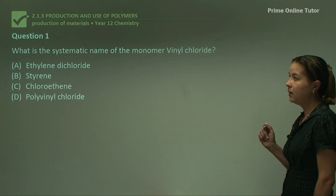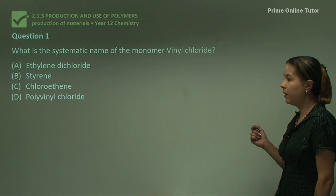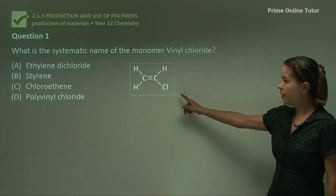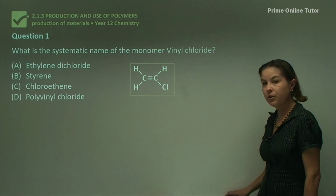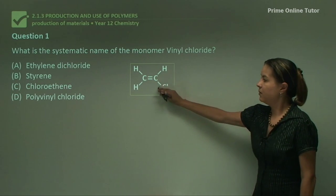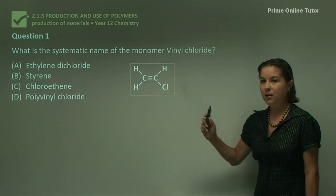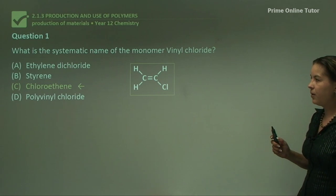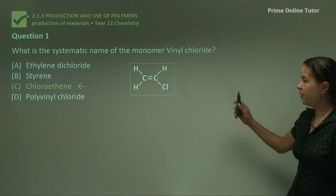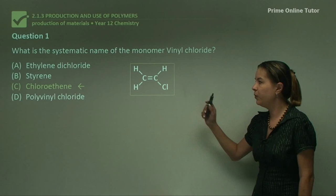Question one: what is the systematic name of the monomer vinyl chloride? If you remember, the structure of vinyl chloride is chloroethene. So that's a pretty straightforward question — you just have to remember that vinyl chloride is chloroethene.